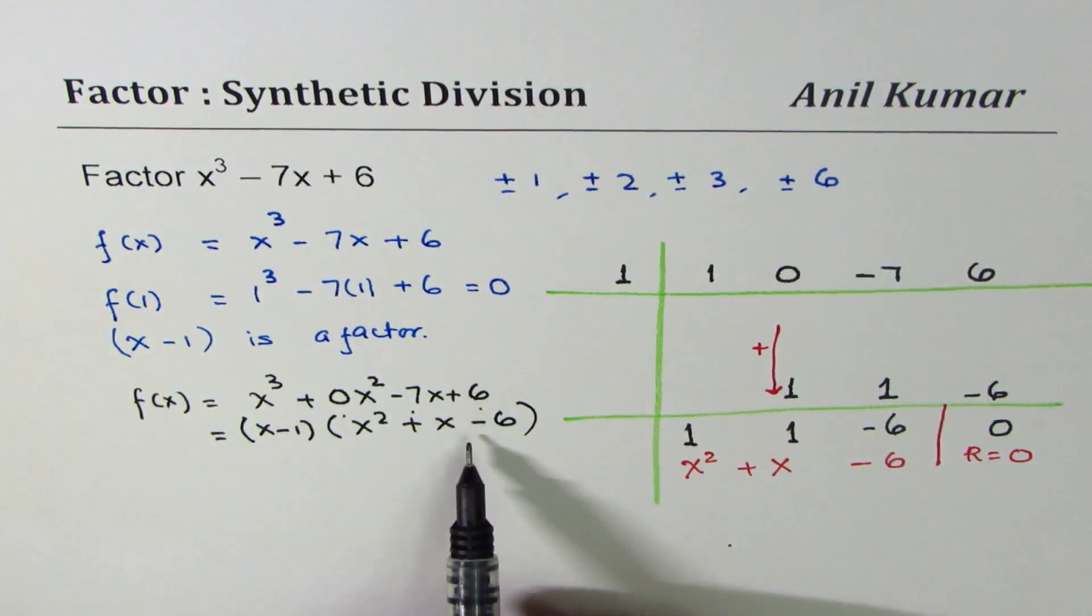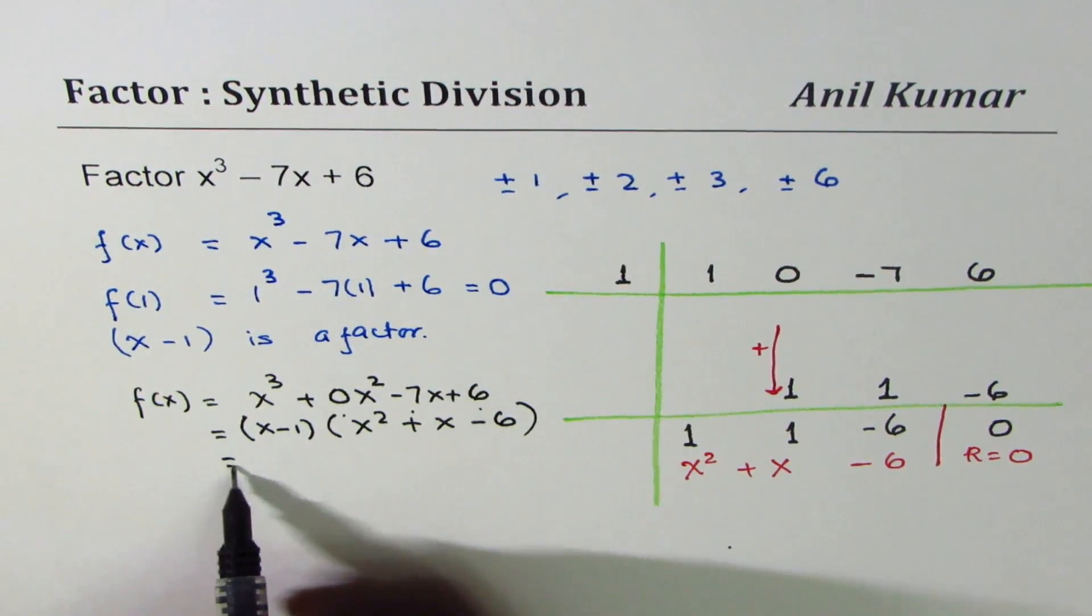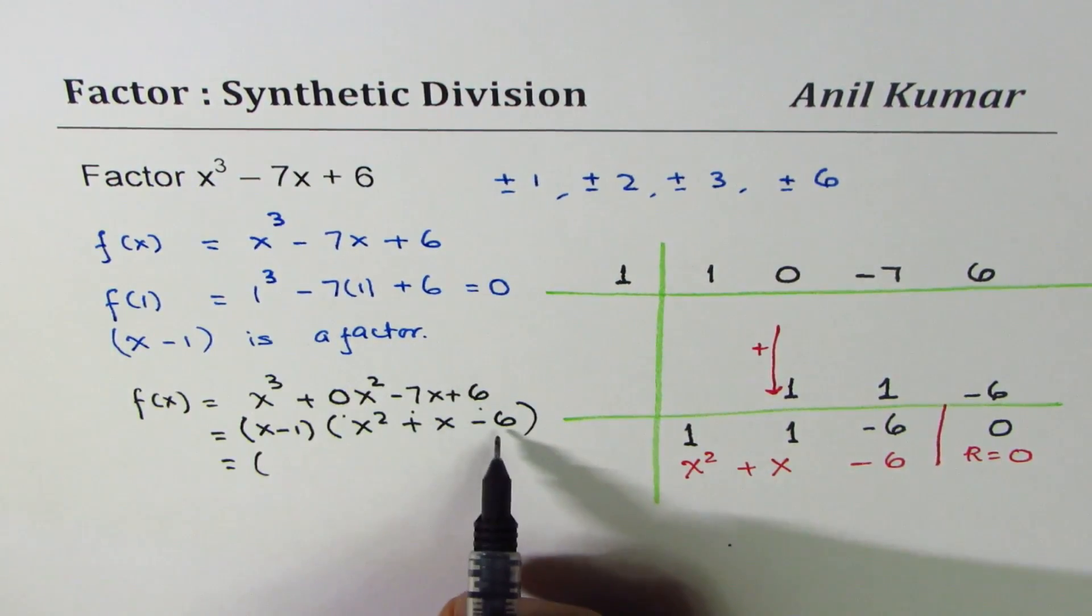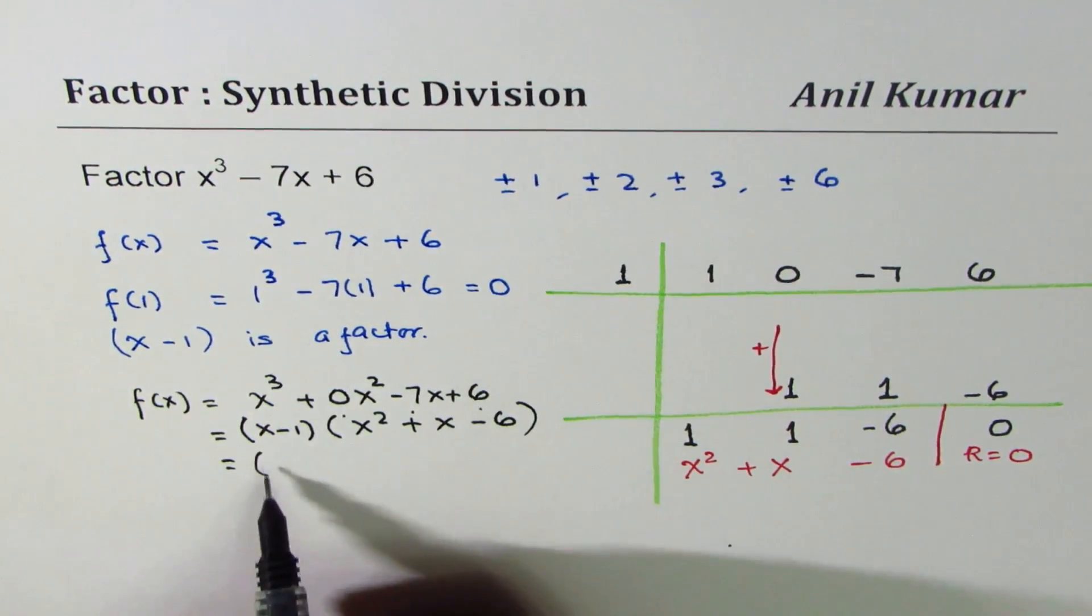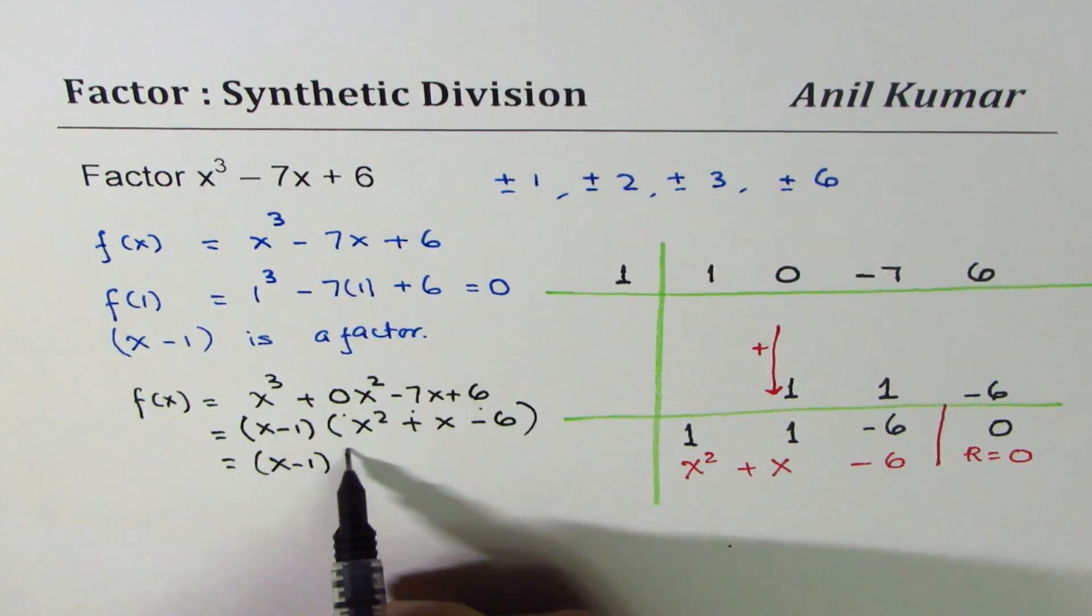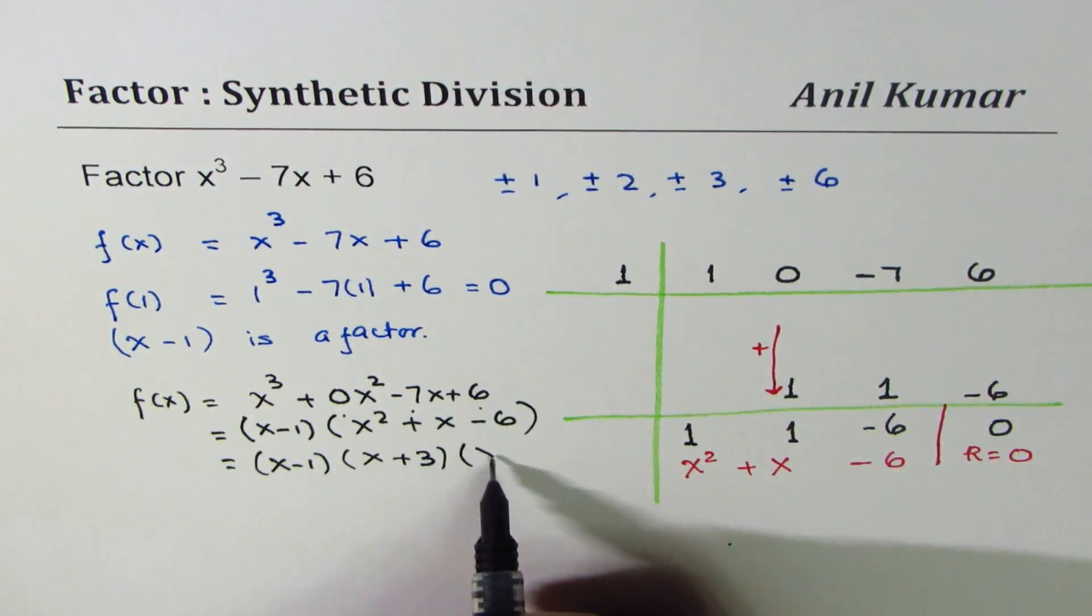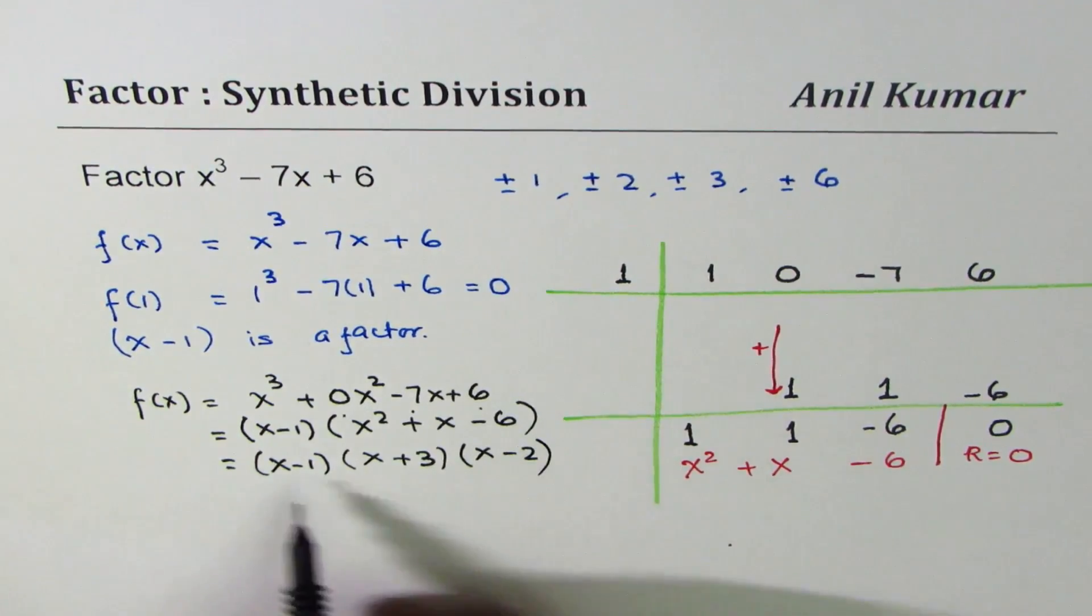Now using sum and product, you can factor the quadratic function. We are looking for a product of -6 and sum of +1. So it is 3 and 2. Where 3 should be positive, 2 negative. That will give us negative product and positive sum. So we get (x - 1)(x + 3)(x - 2).